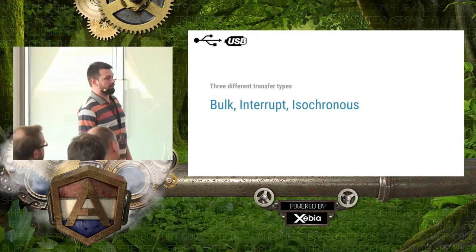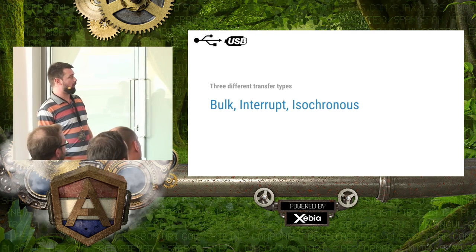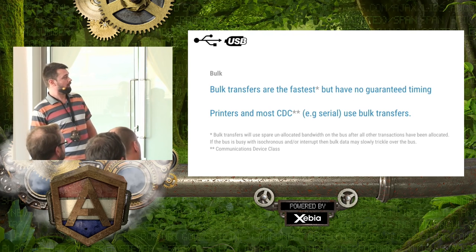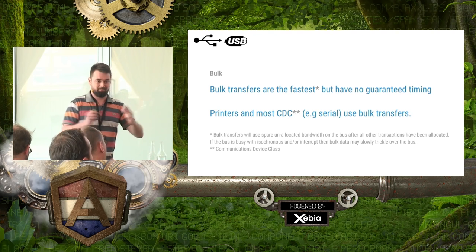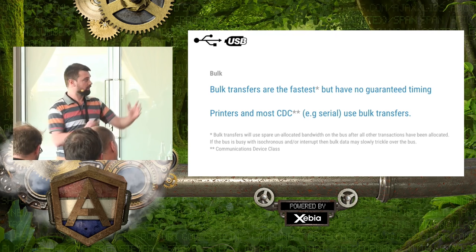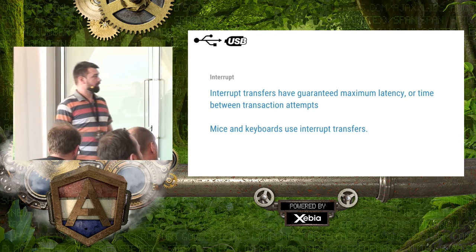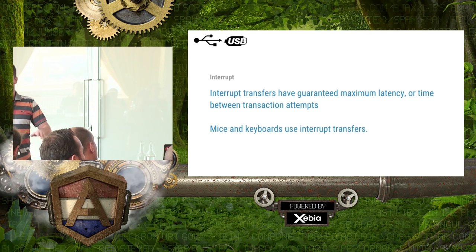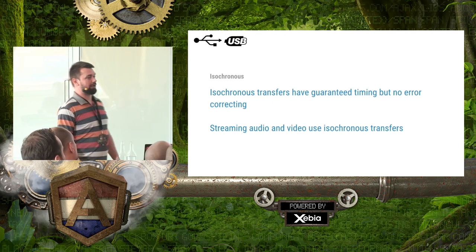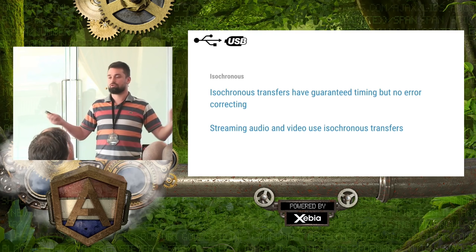USB is different from Bluetooth — it has three different modes of transferring things: bulk, interrupt, and isochronous. Bulk is the fastest but has no guaranteed timing — you just try to send a lot of data in bulk. This is very common for printers and serial connections. Interrupt has a guaranteed maximum latency, so this is good for a mouse and keyboard — you don't want it to stall while you're typing. And isochronous is kind of like a broadcast — if you don't receive the data, it doesn't matter; just do your best attempt.